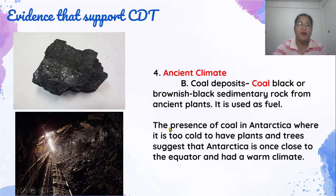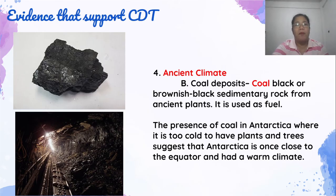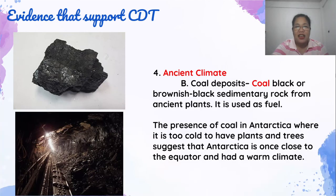Nakita nila ang mga coal deposits sa Antarctica. Ang Antarctica ay napakalamig at hindi mabubuhay doon ang mga plants dahil sa sobrang lamig. Pero meron doon ng coal — na ang ibig sabihin nito ay ang Antarctica ay dating mayroong mainit na klima kaya tumubo doon ang mga plants. Nang mamatay ang mga plants and trees na ito, sila ay natabunan ng lupa, nanigas at naging bato, at ngayon ay mayroon nang coal sa Antarctica.